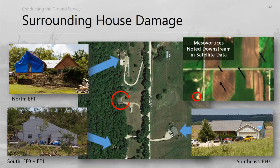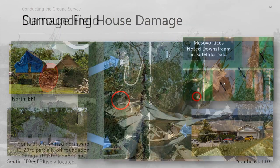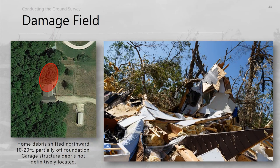Broader context: houses to the north and south showed primarily EF1 damage — even EF0 for the house just to the southeast with only cosmetic shingle damage. In the satellite data, we could see individual mesovortices along the south flank of the tornado that, when backtracked, lined up immediately with this house. The evidence was mounting that we were dealing with a multiple-vortex tornado with a very narrow damage path right over that house.